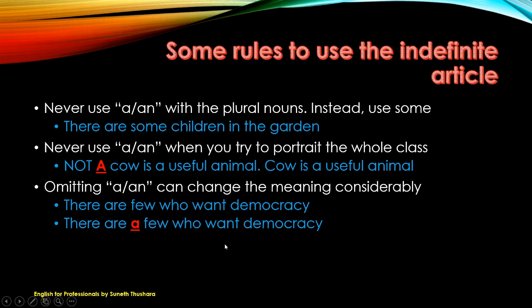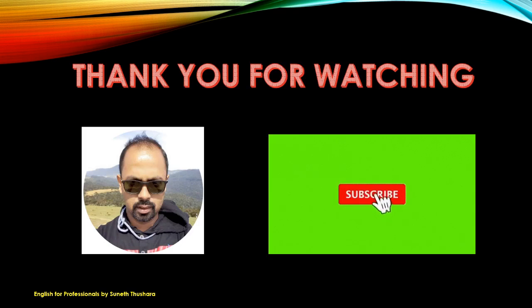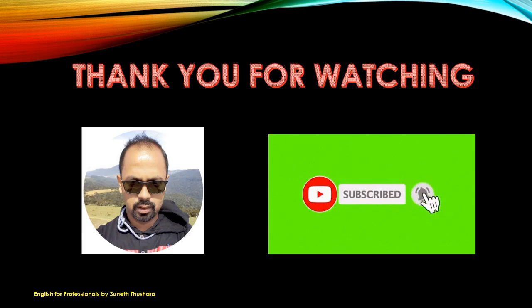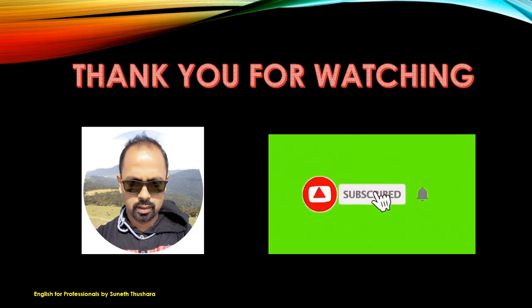Omitting A or AN can change the meaning considerably. For example, 'There are a few who want democracy' means within some group there are a few people who want democracy — implying the others do not. There is a meaningful difference depending on how the article is used. Thank you for watching. Please subscribe to my channel and press the bell icon to get more videos like this. Thank you very much. Have a nice day.